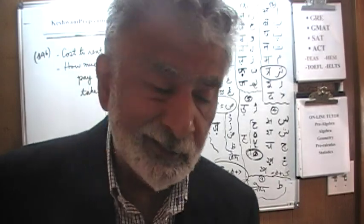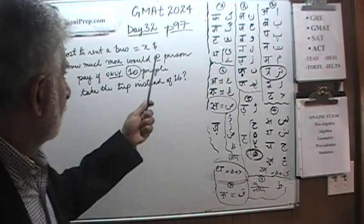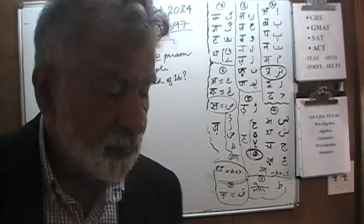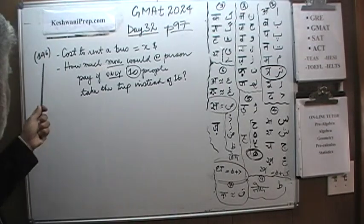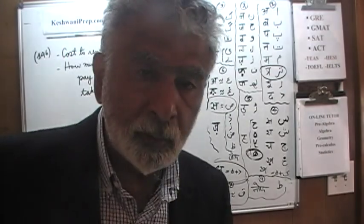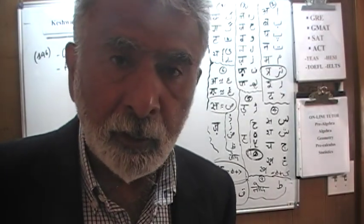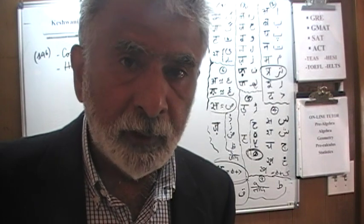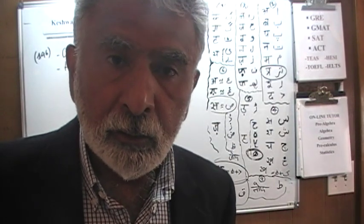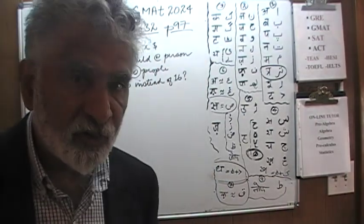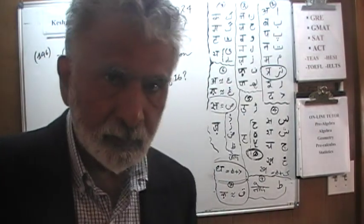Today is our lesson number 32. We are on page number 97. The very first problem on the page, question number 146, is already on the blackboard. I am going to read it to you, then I am going to get out of the frame. You do it yourself and then we will compare the work that you did against the work that we are going to do together. It is a very straightforward, very simple problem.